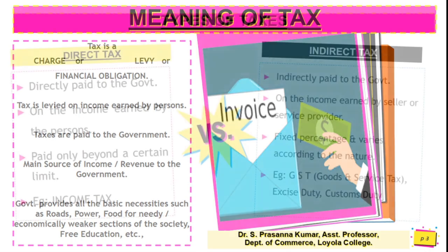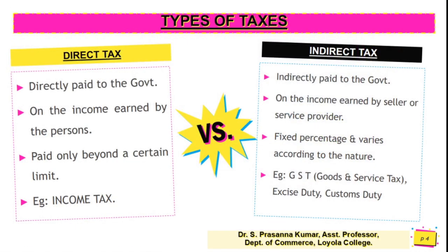There are two types of taxes: direct tax and indirect tax. Direct tax is directly paid to the government. In indirect tax, one person collects the tax from another and remits it to the government. Direct tax is levied on the income earned by the person, while indirect tax is paid on income earned by the seller or service provider.